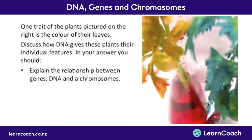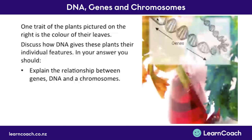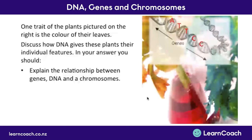Now let's look at a question which brings these things together. One trait of these two plants is the colour of their leaves. We need to discuss how DNA gives these plants their individual features. In the answer, we need to explain the relationship between genes, DNA and chromosomes. There are genes, DNA, and chromosomes inside every one of these plant cells. We know that these genes are made up of the bases A, T, C and G. One combination of these bases, say ATTCC, might give yellow leaves. Another combination might give green leaves.